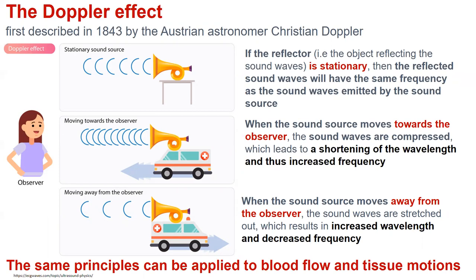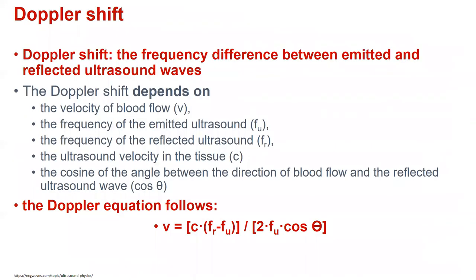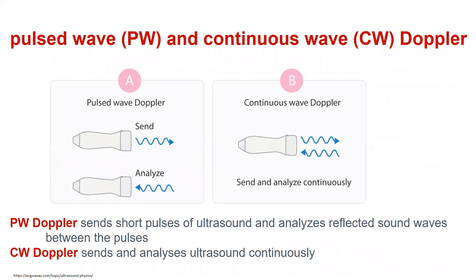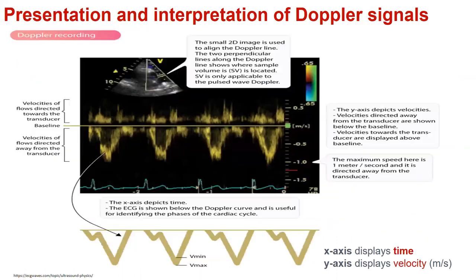The same principles can be applied to blood flow and tissue motions. The Doppler shift is the frequency difference between emitted and reflected ultrasound waves, depending on many factors. The Doppler effect is utilized to calculate velocity, frequency, and direction of moving objects — for example, erythrocytes. Pulse wave Doppler sends short pulses of ultrasound and analyzes the reflected sound waves between the pulses, while continuous wave Doppler sends and analyzes ultrasound continuously, as shown in this echocardiography picture.